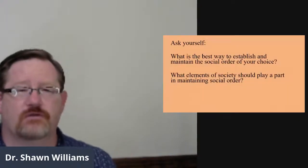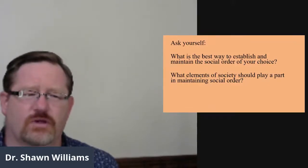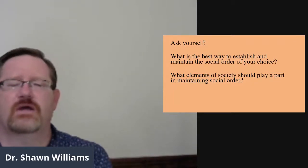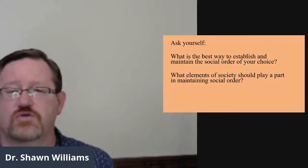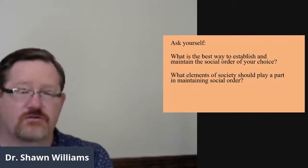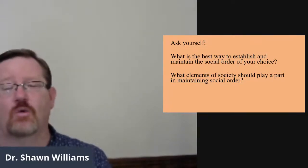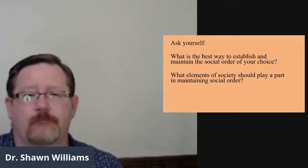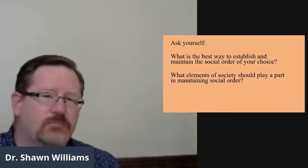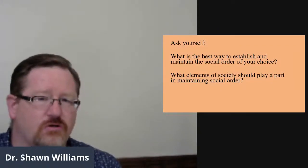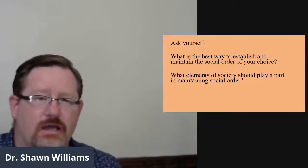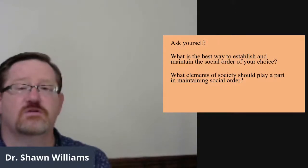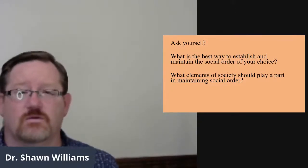To start off with, I want you to ask yourself a couple of questions. First of all, think about what you feel the best way to establish and maintain the social order of your choices. If you've watched the first video, think about this idea of social hierarchy. What do you think the best way of creating a hierarchy would be, and how would you go about creating it? Also ask yourself: if you're building this social structure that's going to help to establish and maintain your ideology, your hierarchy, what elements of society do you think would be most important in establishing or maintaining that social order?